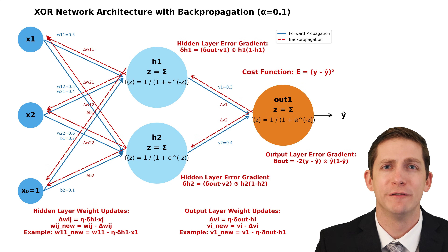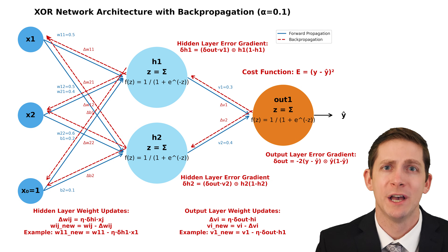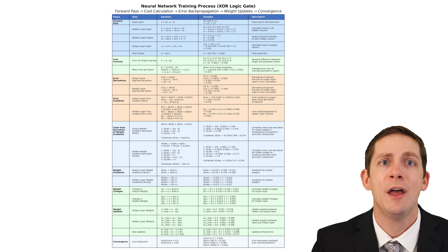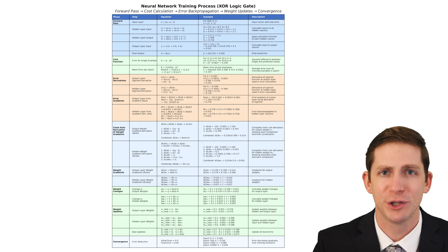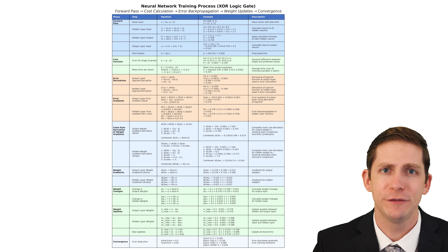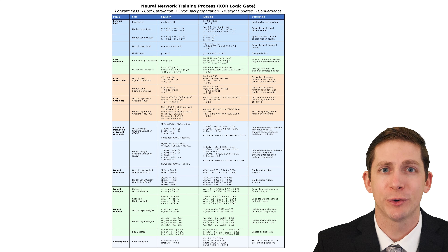This training process involves sequential mathematical operations that must be performed in order for the network to learn. There are quite a few steps, and to simplify the learning process, I made one single table that contains all the information we will need to know. We will go through each step in this video, and we will learn how the network is trained to solve the XOR case.